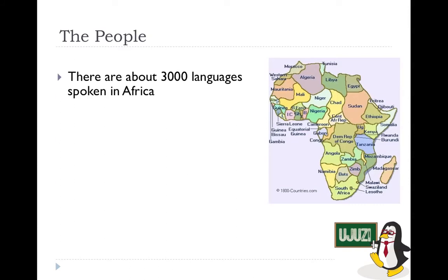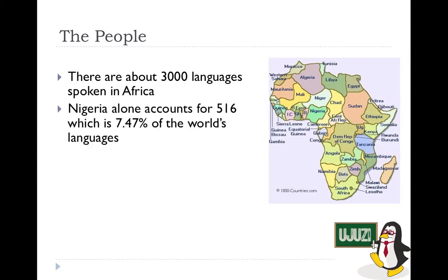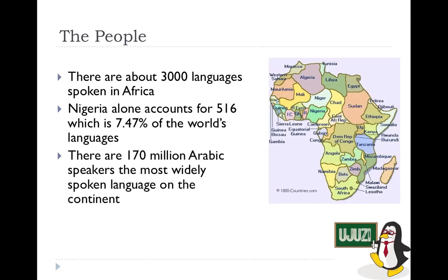There are 3,000 languages spoken in Africa, reflecting the many tribes and ethnic groups that lived across the continent before colonization and the slave trade. Nigeria alone has 516 languages, which makes up 7.47% of the world's languages — almost 8% of the world's languages are spoken in Nigeria.